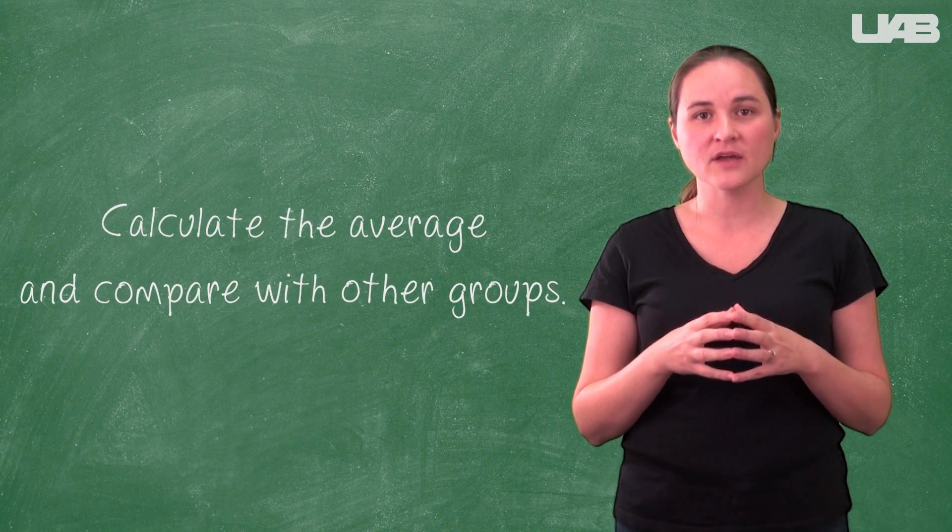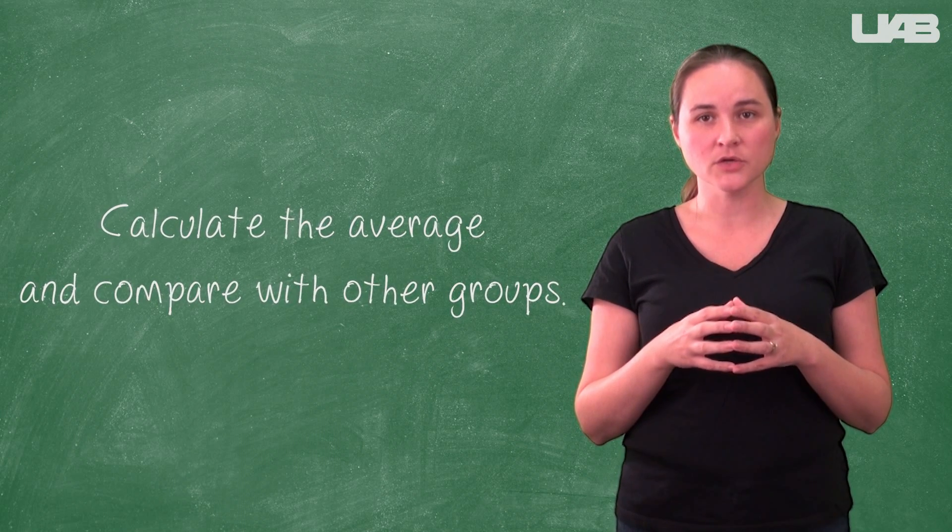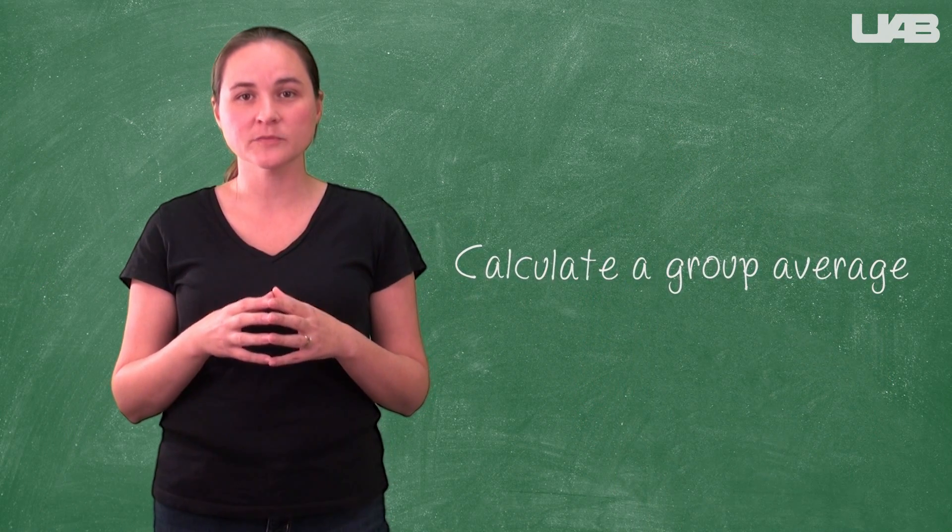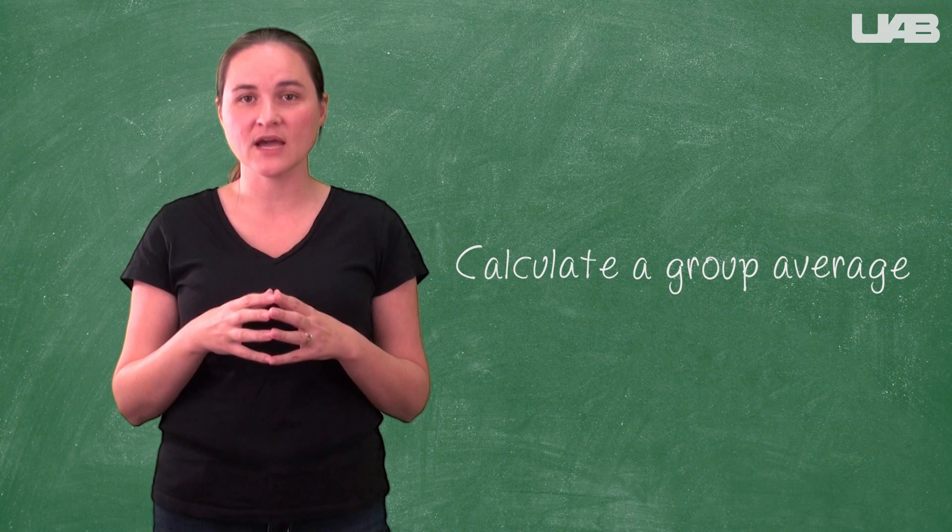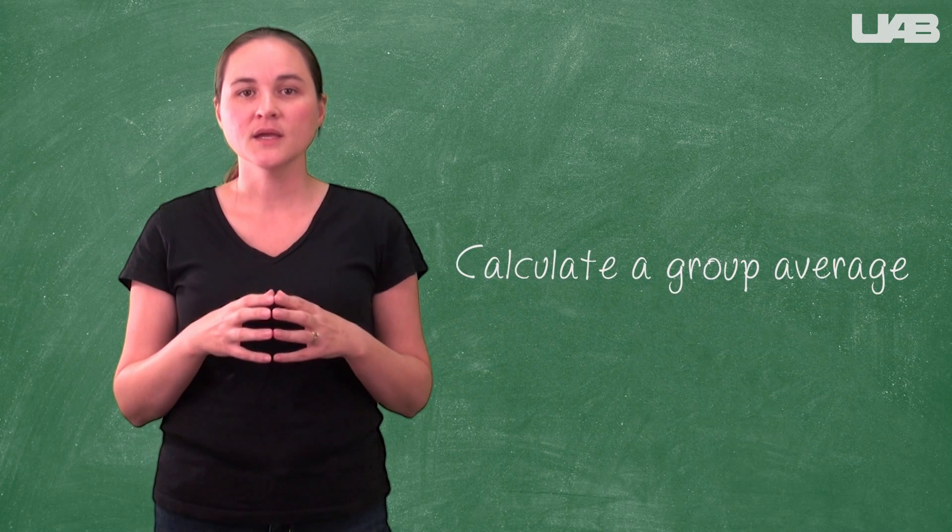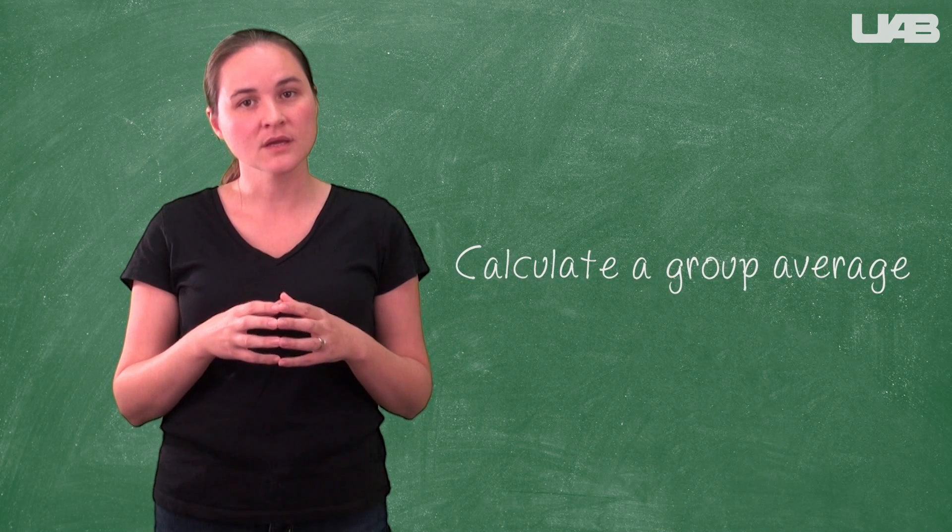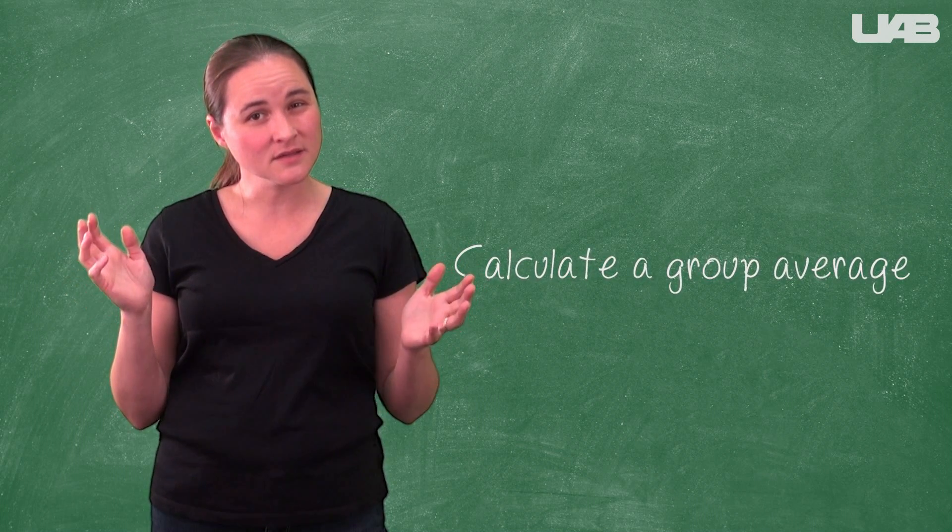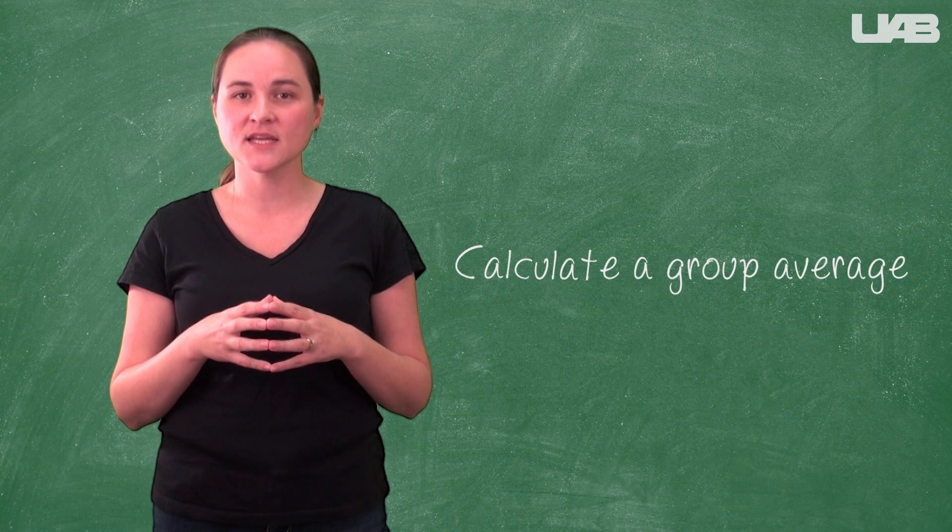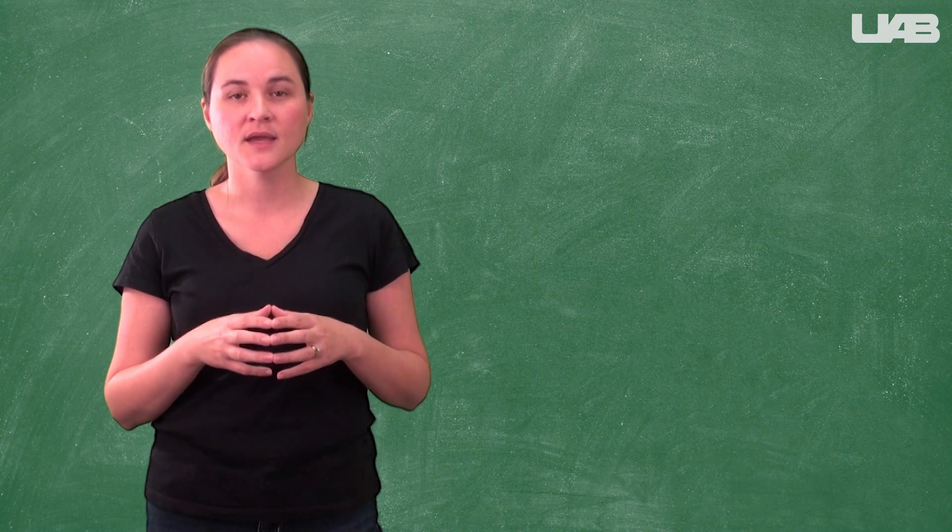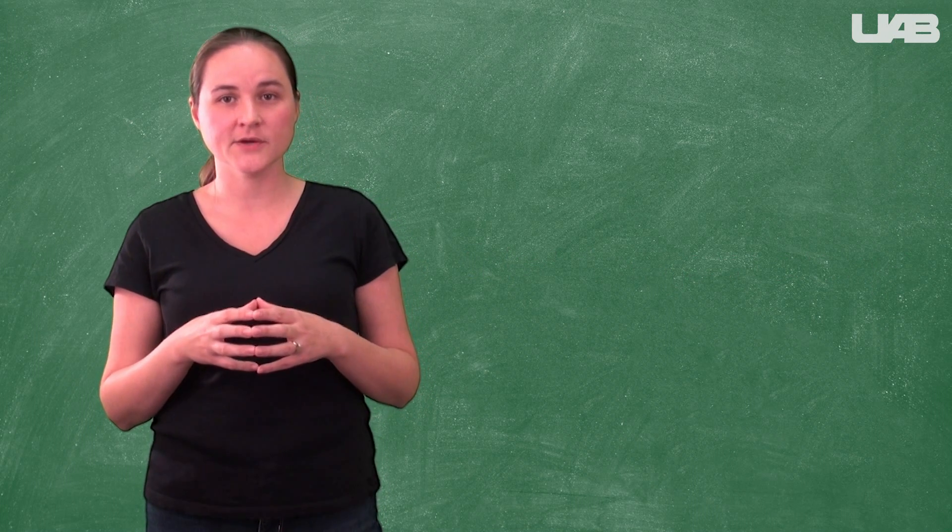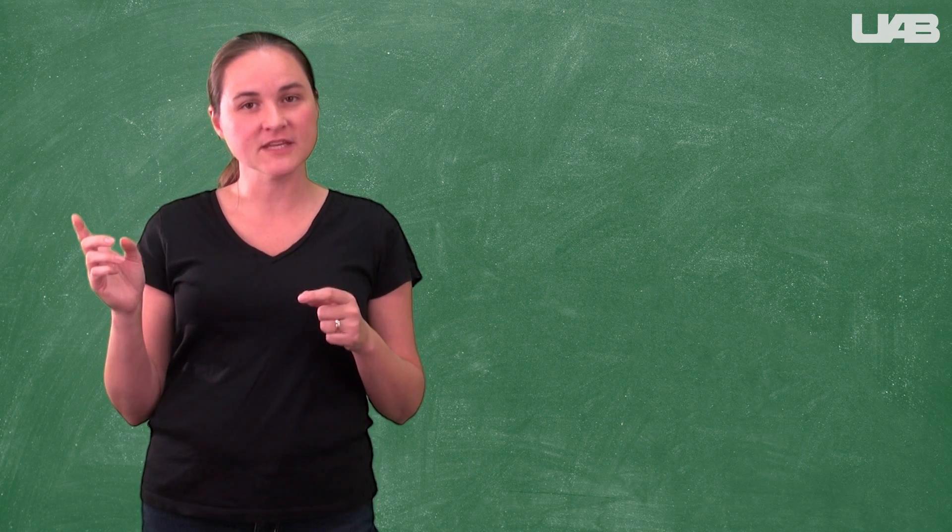Once you have your average calculated molar mass, you should compare your value with other groups that have the same unknown. Obtain values from at least two other groups so that you can calculate a group average. This will allow you to compare your result to the average so that you can assess your results. Are you all getting about the same answer? If not, your TA can help you troubleshoot. Thank you for watching this background video. Please go watch the technique video now.